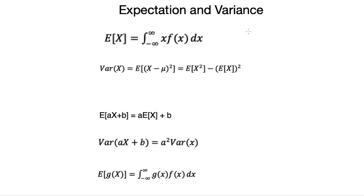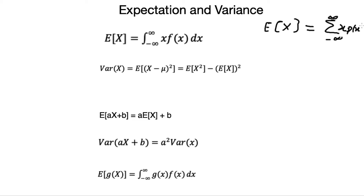We will also discuss expectation and variance. For a continuous random variable X, the expectation E[X] is defined as the integral from negative infinity to infinity of x·f(x) dx. In the discrete case, E[X] was defined as the summation of x·p(x) over all values. In the continuous case, we use the integral instead of summation, and f(x) instead of p(x).